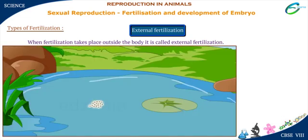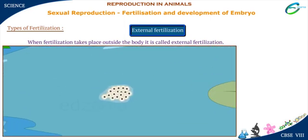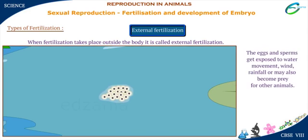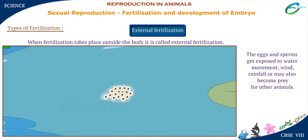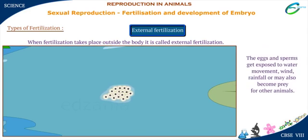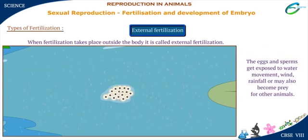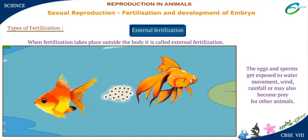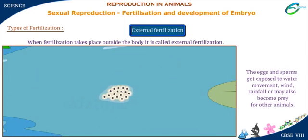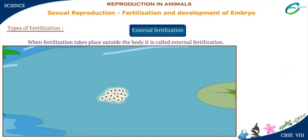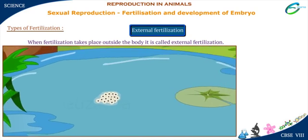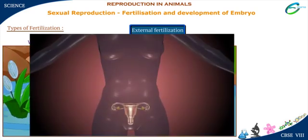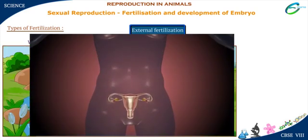Can you guess why animals showing external fertilization lay so many eggs? The eggs and sperms get exposed to water movement, wind, and rainfall, and may also become prey for other animals. Hence, to ensure successful reproduction, these animals lay many eggs.